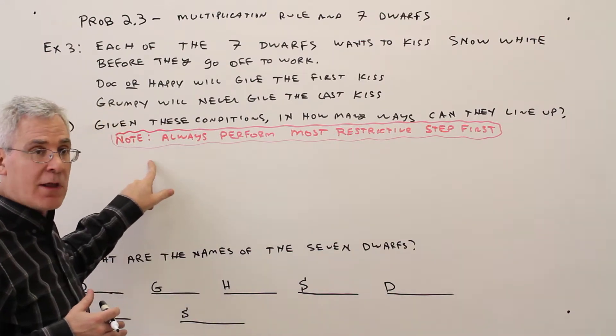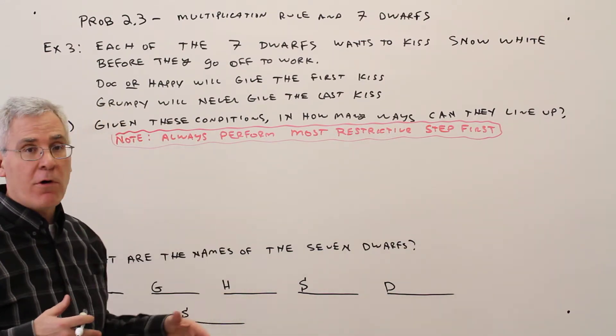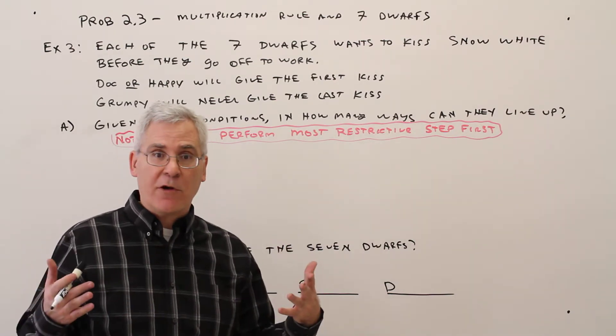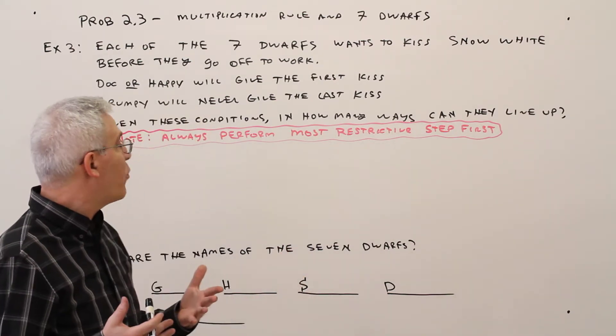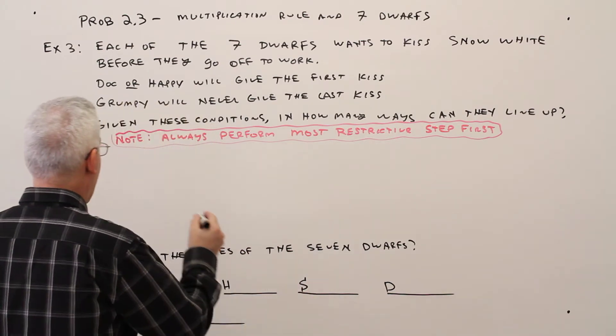Okay, here's that reminder again. Always perform the most restrictive steps first. That's just in general. Okay, I'm a visual person. There's seven dwarfs. I'm going to make seven slots.